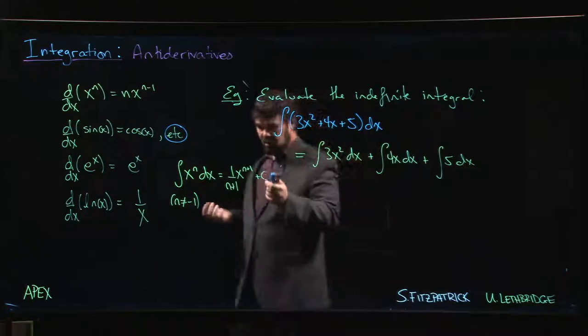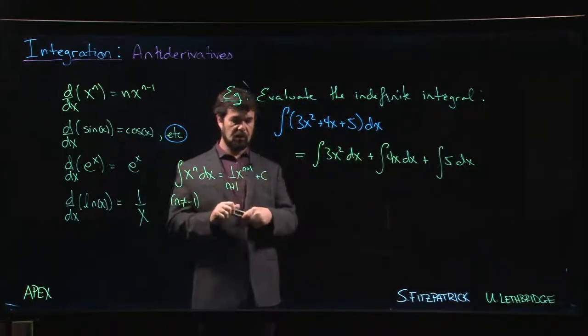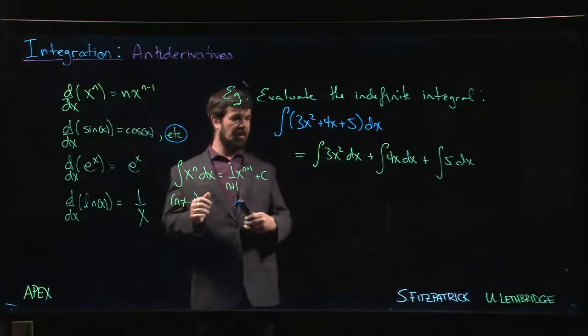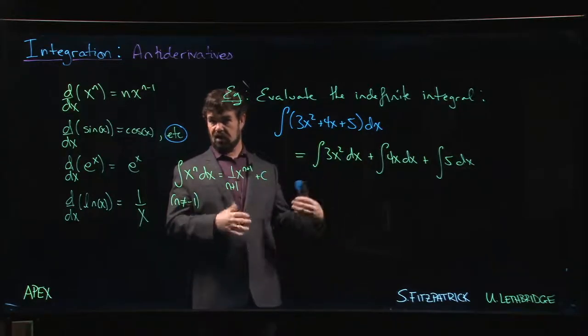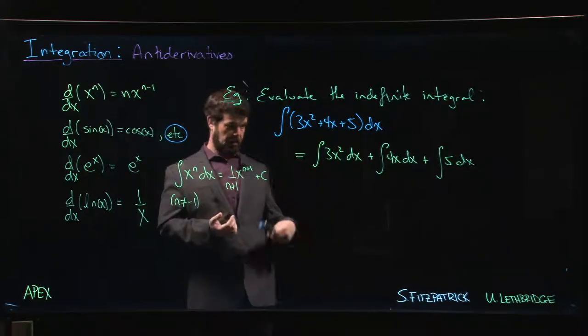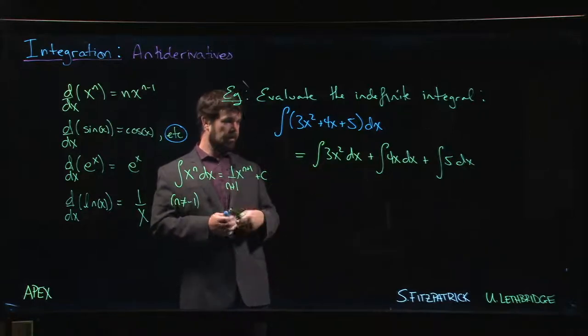We don't know what that constant is going to be. There's some arbitrary constant. All we're saying when we put that plus C on there is that if we added a constant to our function, it wouldn't affect the derivative. That's all we're saying.